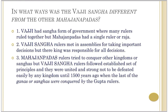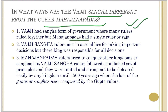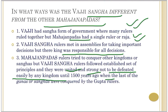The Vajji Sangha differed from the Mahajanapadas in key ways: Vajji followed the Sangha form of government with many rulers, while Mahajanapadas had a single powerful ruler. In the Sangha, rulers met in assemblies to take important decisions, whereas in Mahajanapadas the king made all decisions. Mahajanapada rulers tried to conquer other kingdoms, but Vajji Sangha rulers followed certain united principles and remained strong. However, the last of the Sanghas was ultimately conquered by the Gupta rulers around 1500 years ago, which we will study in later chapters.